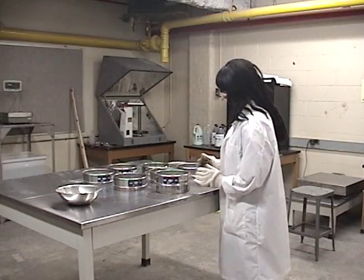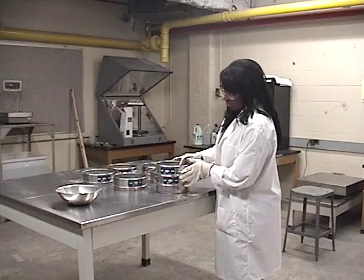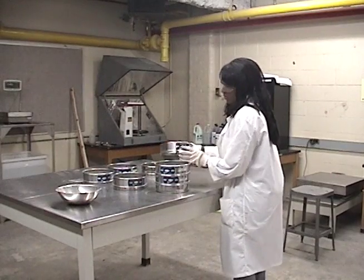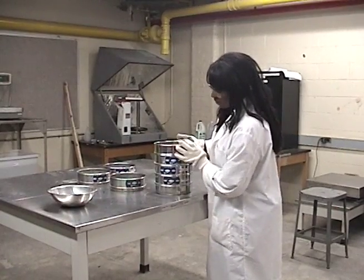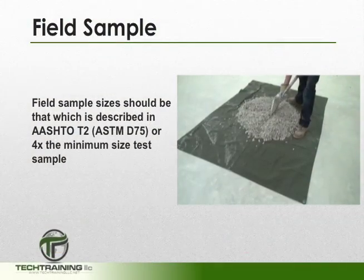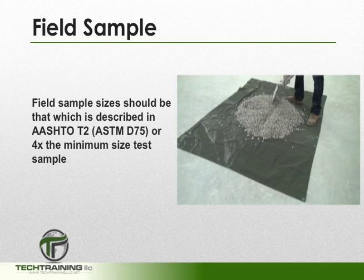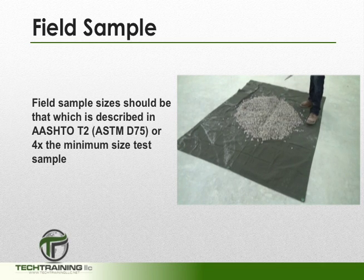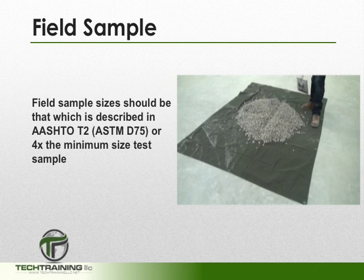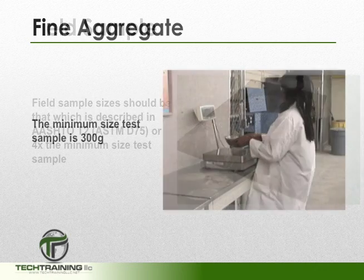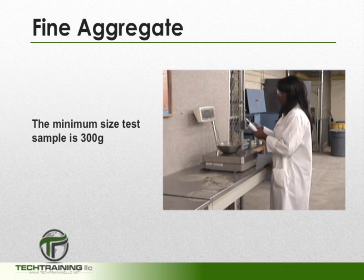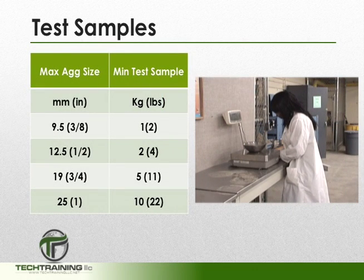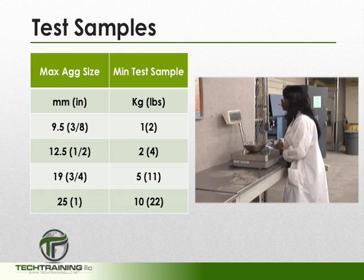In this procedure, a set of nested sieves with progressively smaller openings is used to determine the size distribution of aggregates sampled. The size of the field sample should be that which is shown in AASHTO T2, or 4 times the minimum size test sample, whichever is greater. Although the minimum size test sample for fine aggregate is 300g, the minimum size test sample for most aggregate will depend upon the maximum aggregate size.